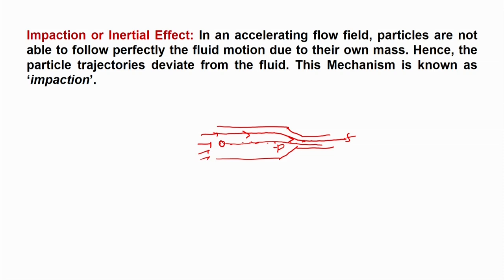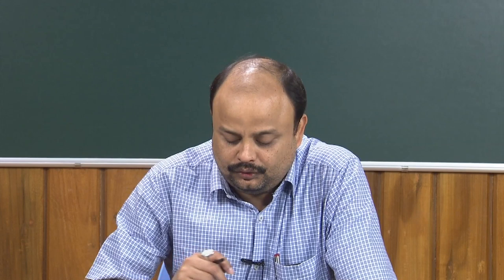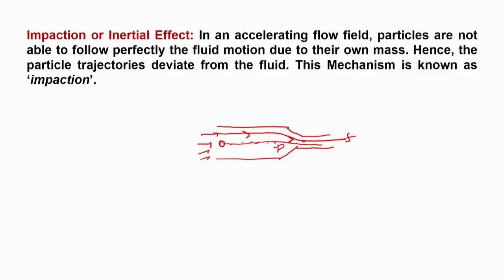The inertial effect arises because, due to acceleration in the flow field, particles are not able to follow the fluid motion. Because they have a certain mass and are moving with a certain velocity, they have momentum and continue moving with that momentum rather than following the fluid path. How much a particle deviates from the fluid path is called impaction or the inertial effect. We need to find: whether particles follow the fluid path, and if not, how much they deviate.